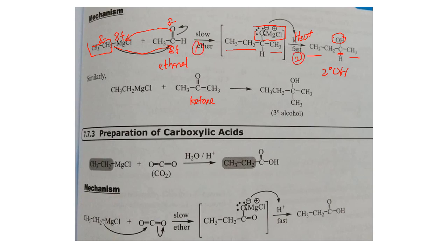You can either write it in two steps or go directly to the product, but the correct method is to write step (i) — the carbonyl compound reaction — and step (ii) — H3O⁺ hydrolysis, just like ozonolysis. Only then is the tertiary alcohol correctly formed.